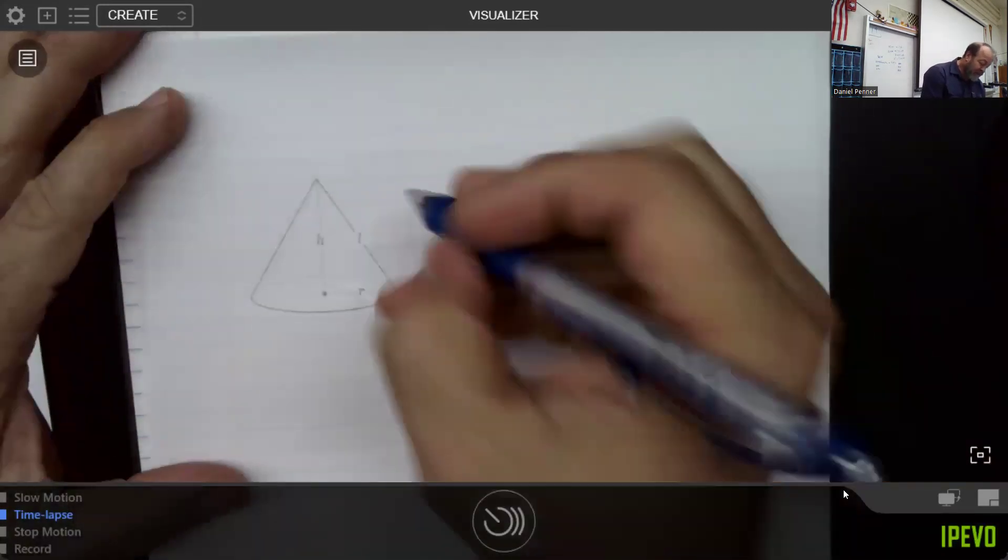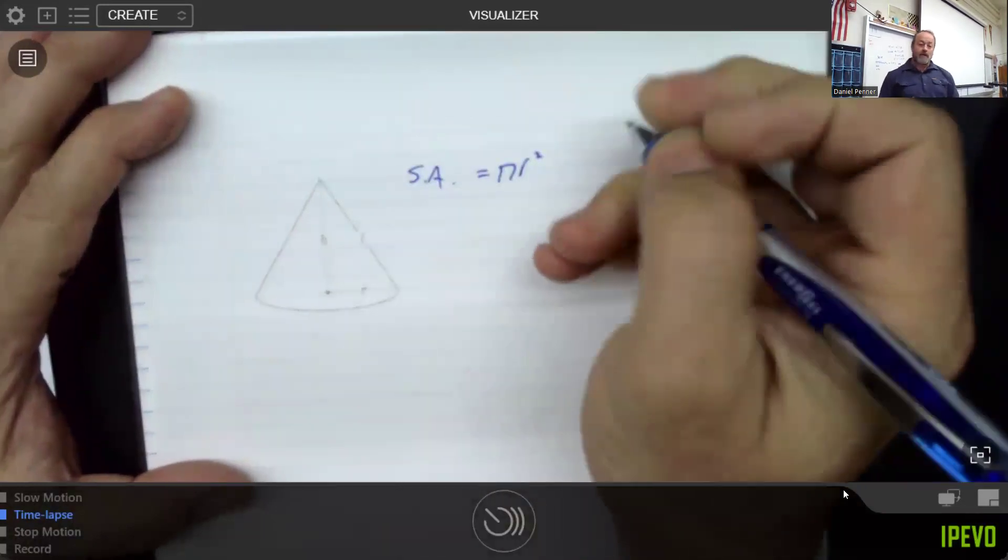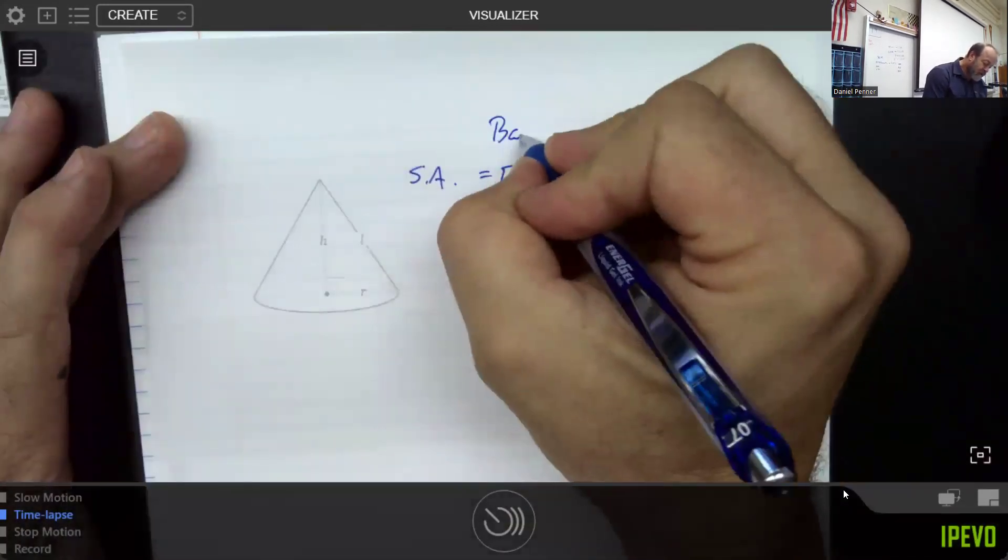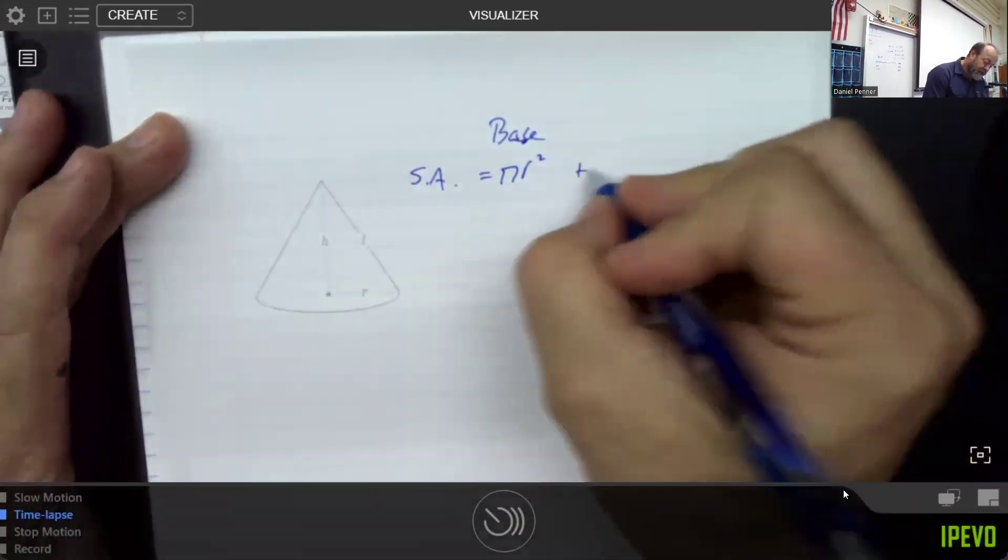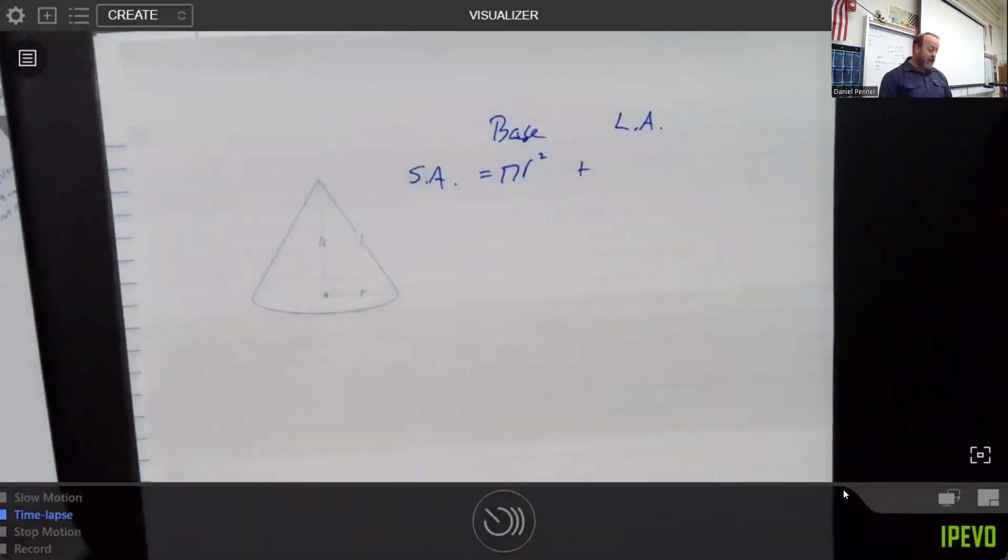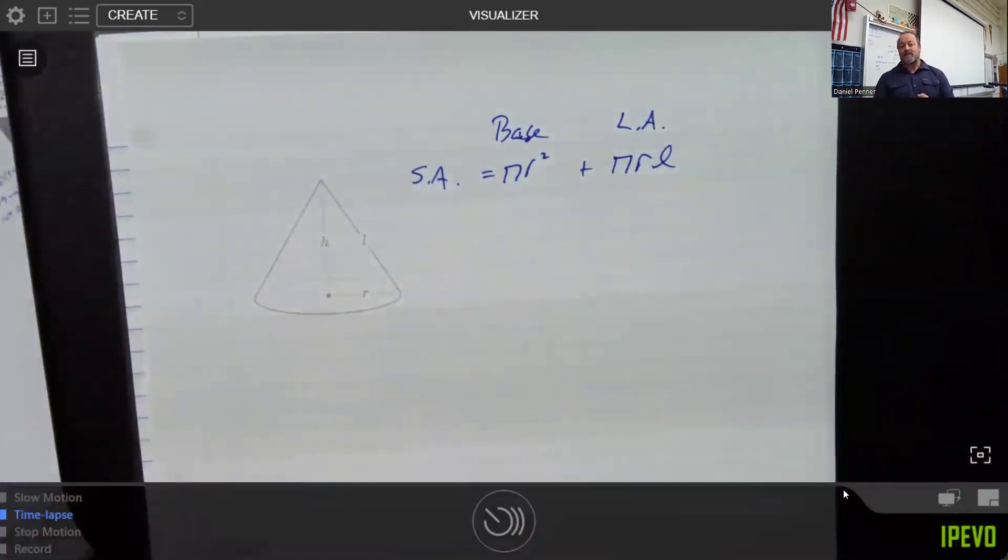When you want to find the surface area of a cone, you would want to start with pi r squared, which of course is the base value, the area of that base. Plus we want to talk about the lateral area, which is that slanted part that we have. And that's a really strange little formula. There is a proof of it. I don't think it's worth going through that with you right now. Just trust me on the fact. Strangely enough, it's just pi times the radius times the slant height, which is really kind of a cool little formula.